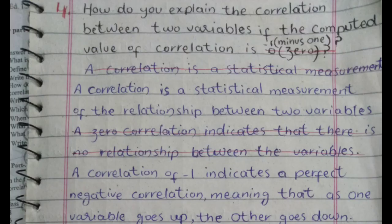How do you explain the correlation between two variables if the computed value of correlation is minus one? A correlation is a statistical measurement of the relationship between two variables. A correlation of minus one indicates a perfect negative correlation, meaning that as one variable goes up, the other goes down.